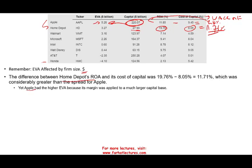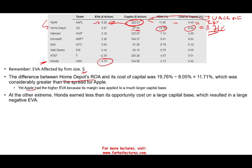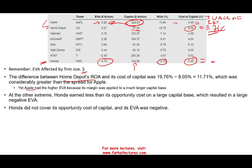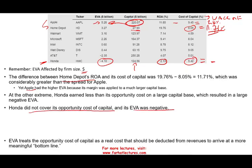Let's look at Honda, which has a negative $4.1 billion economic value added. Honda's ROA is 2.13% while their cost of capital is 5.14%, giving a negative percentage spread. Multiplied by their large asset base of $124.56 billion, that results in a negative EVA. Honda simply did not cover its opportunity cost of capital.